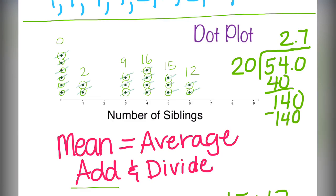So the average or the mean is two point seven siblings. You can't have two point seven siblings but it is the average of all of the people surveyed in this poll.